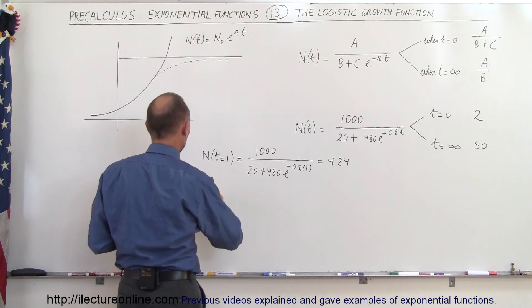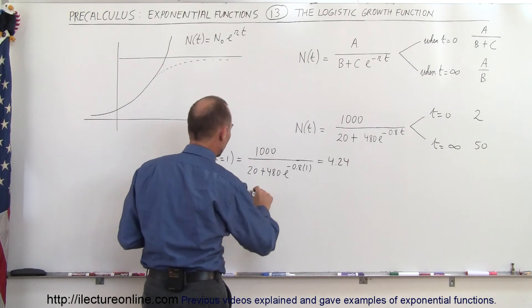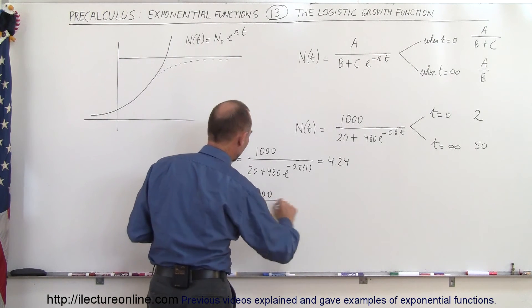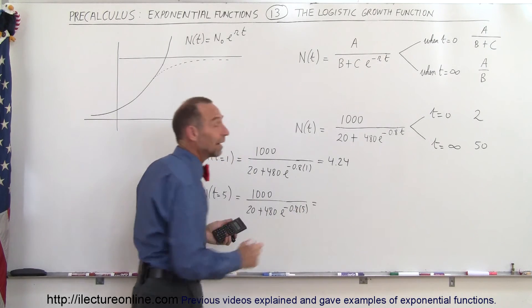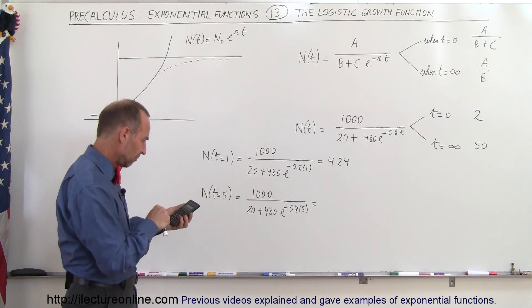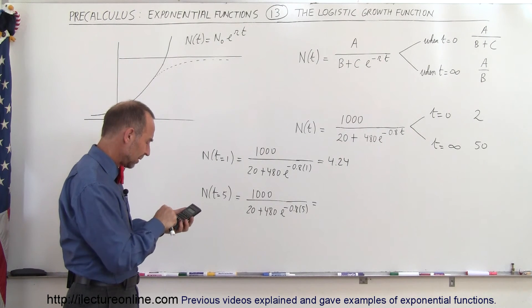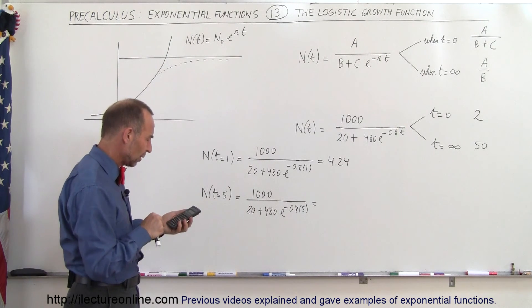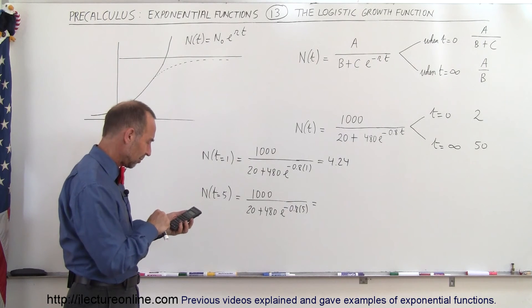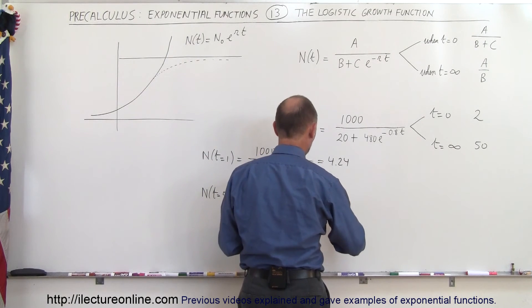So what would be the population growth when t is equal to 5? So after five years, how many individuals would be on the island now? So we take 1000 divided by 20 plus 480 times e to the minus 0.8 times 5. And let's see what we get after five years. So we get negative 4, take e to the x, multiply that times 480. Then we add 20 to that, and use that as the 1 over x, and then times 1000, and we get 34.7.